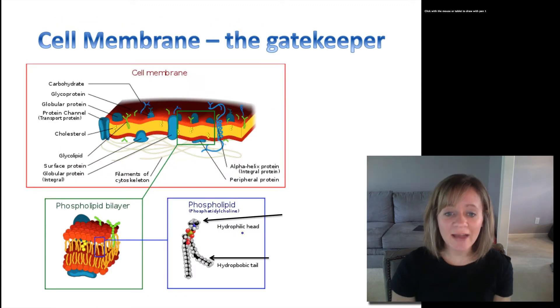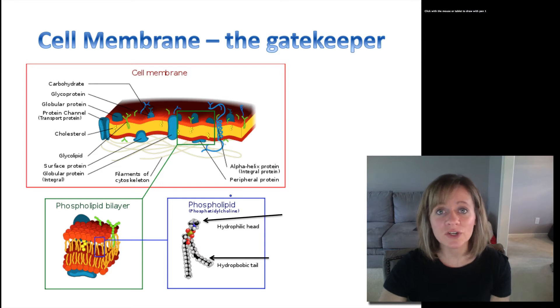So cell membrane I like to call the gatekeeper because it's selectively permeable. It's only going to allow certain things to pass directly through and other things are going to need some help. So here is the phospholipid bilayer. Let's take a closer look.